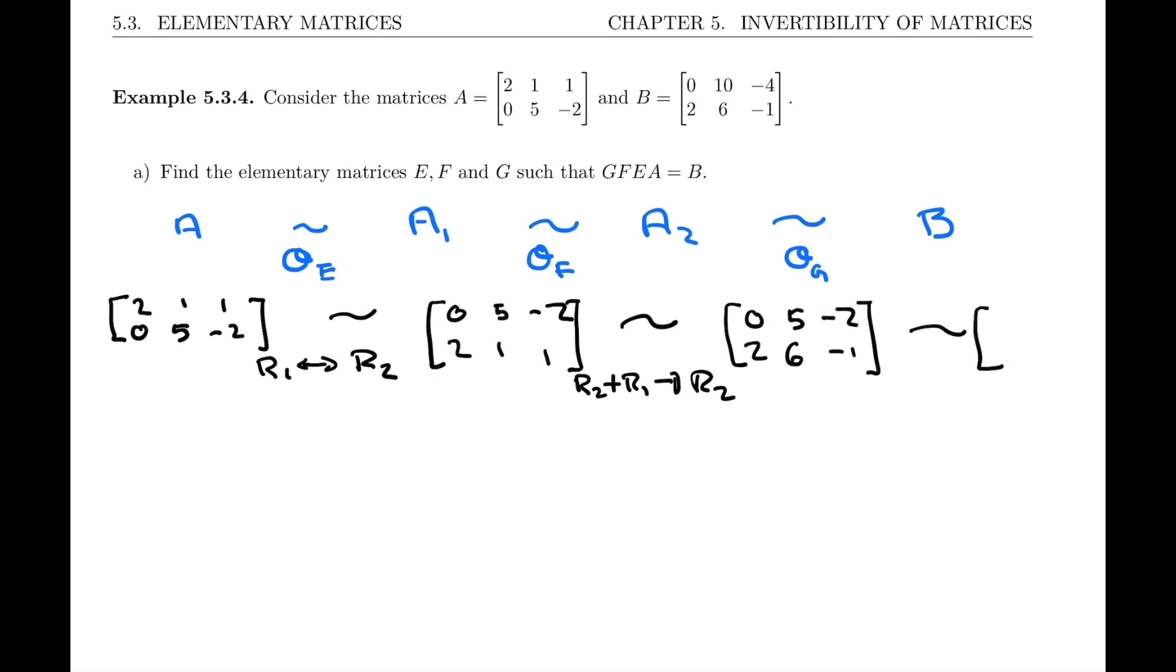So I'm almost there, and I can see that if in my next step I have to obtain 0, 10, minus 4 and 2, 6, minus 1, well then you can see that the operation is simply going to be to multiply row 1 by 2. So 2 row 1 becomes the new row 1. So these are the three operations that we called OE, OF, and OG, and they correspond to the three elementary matrices.